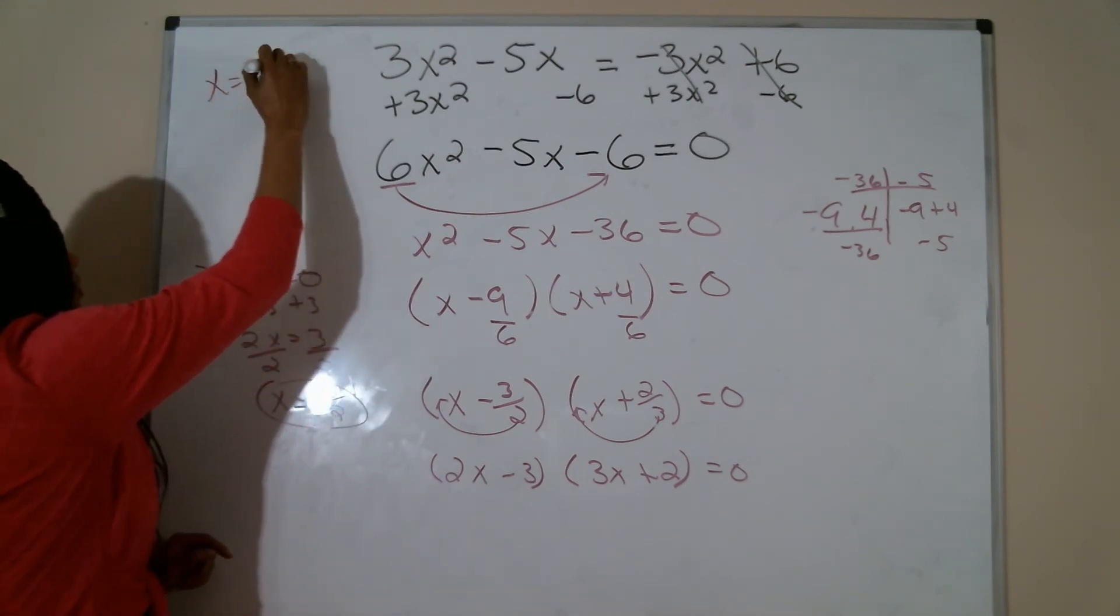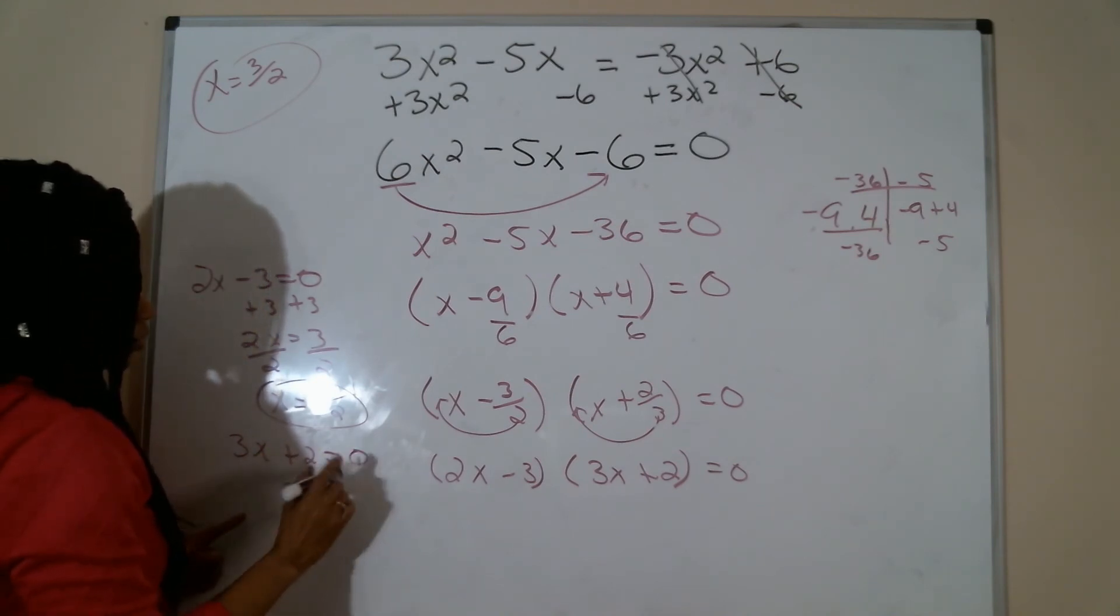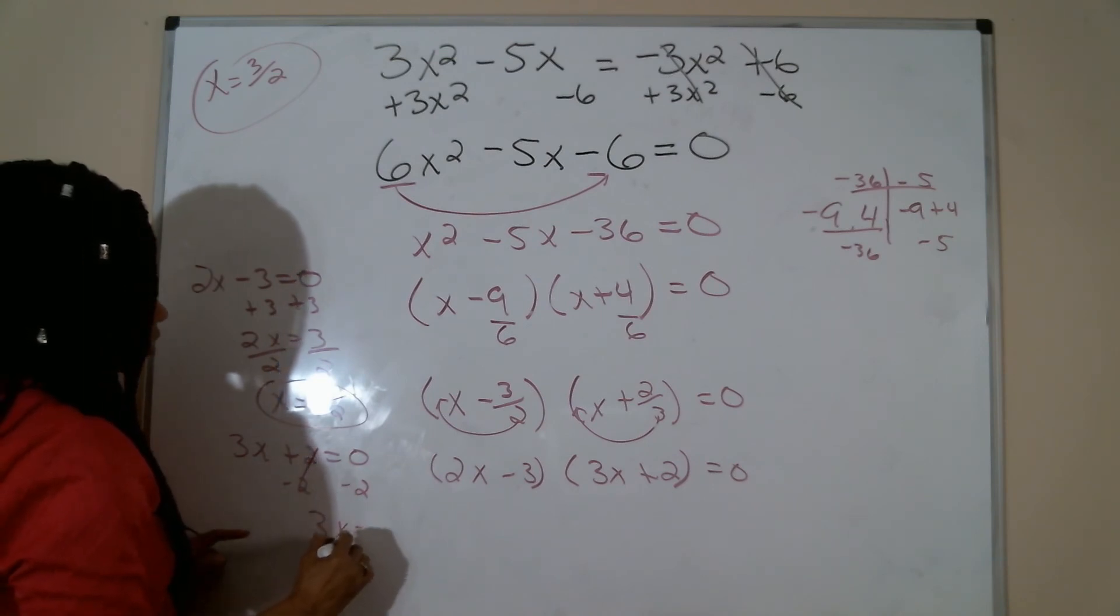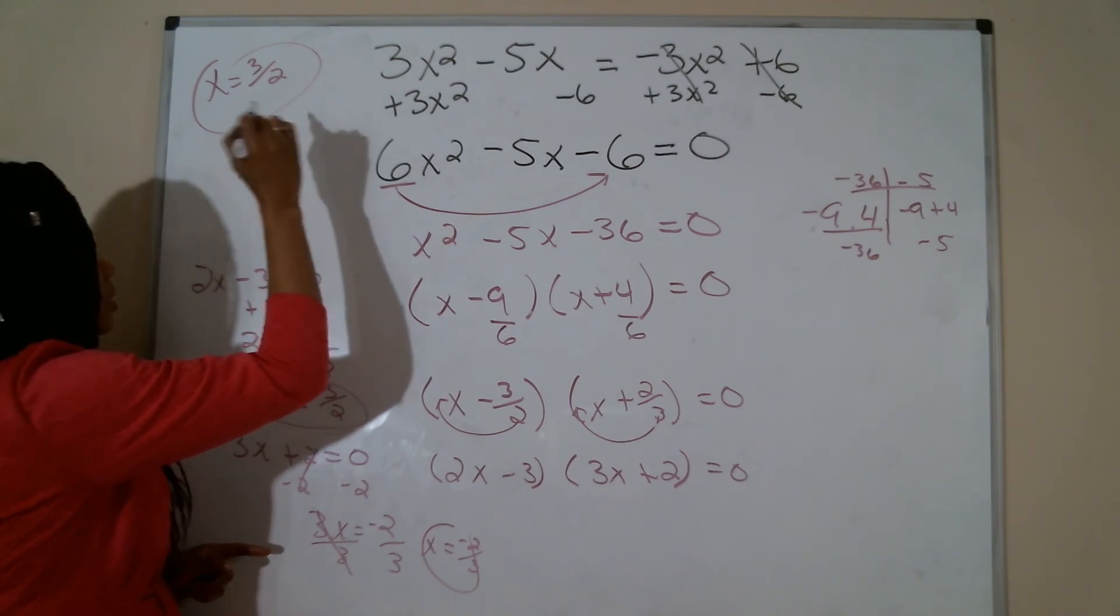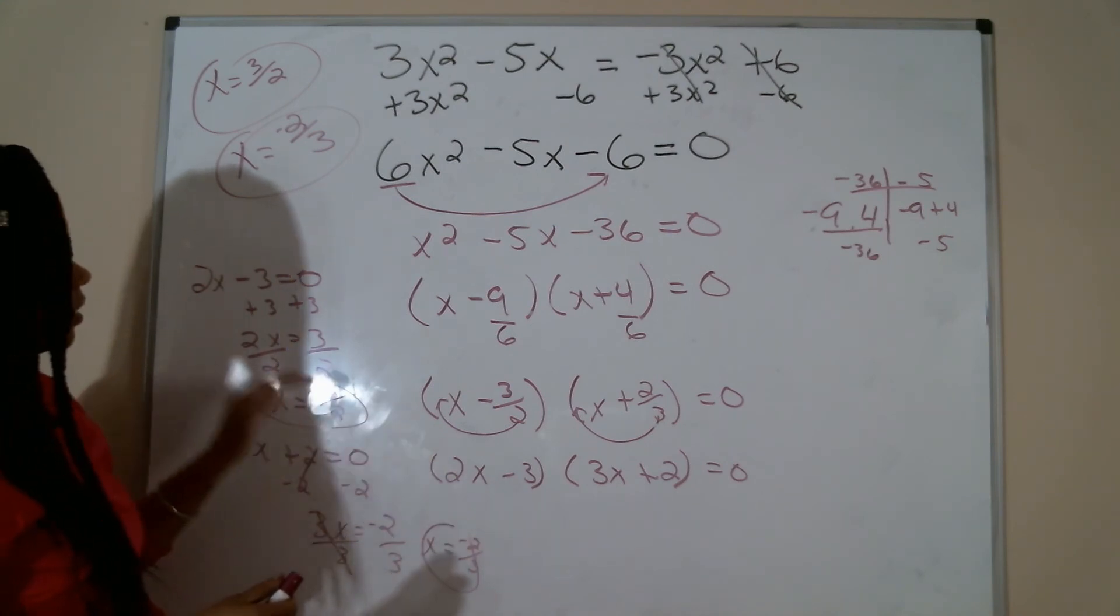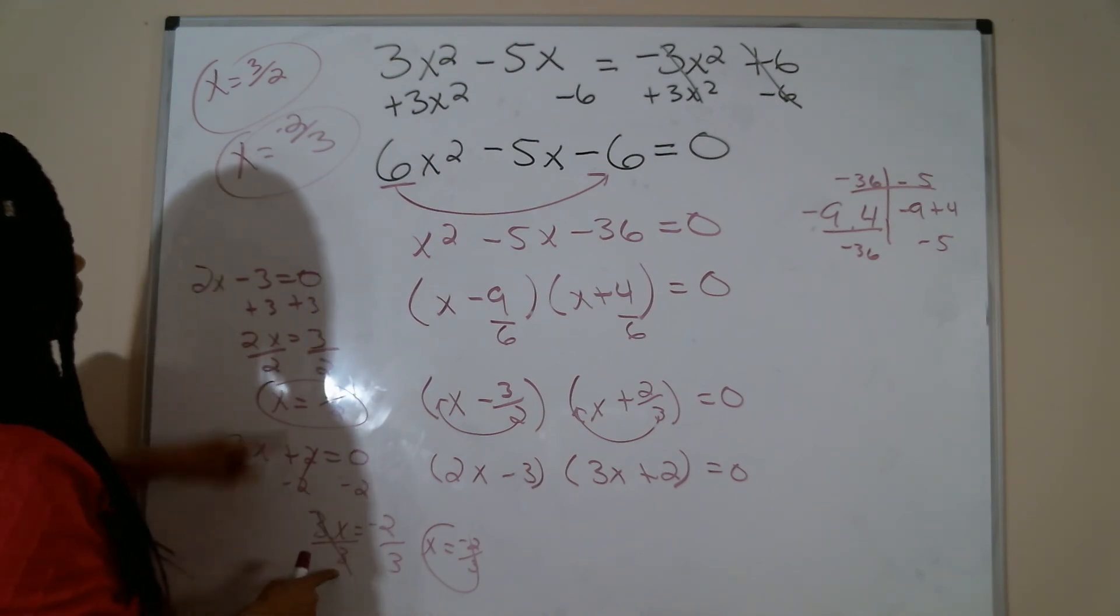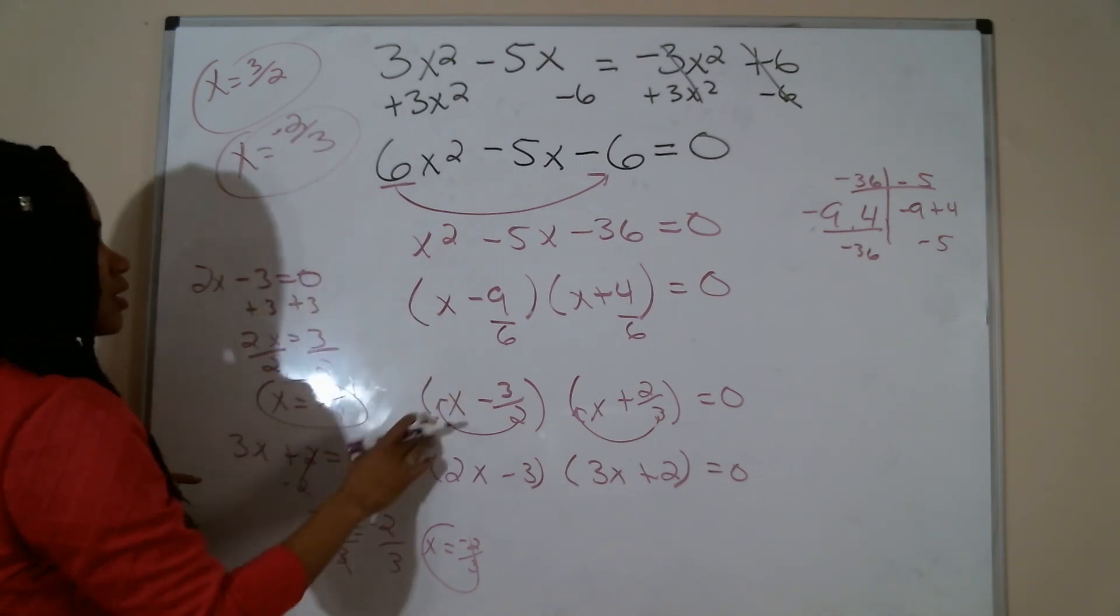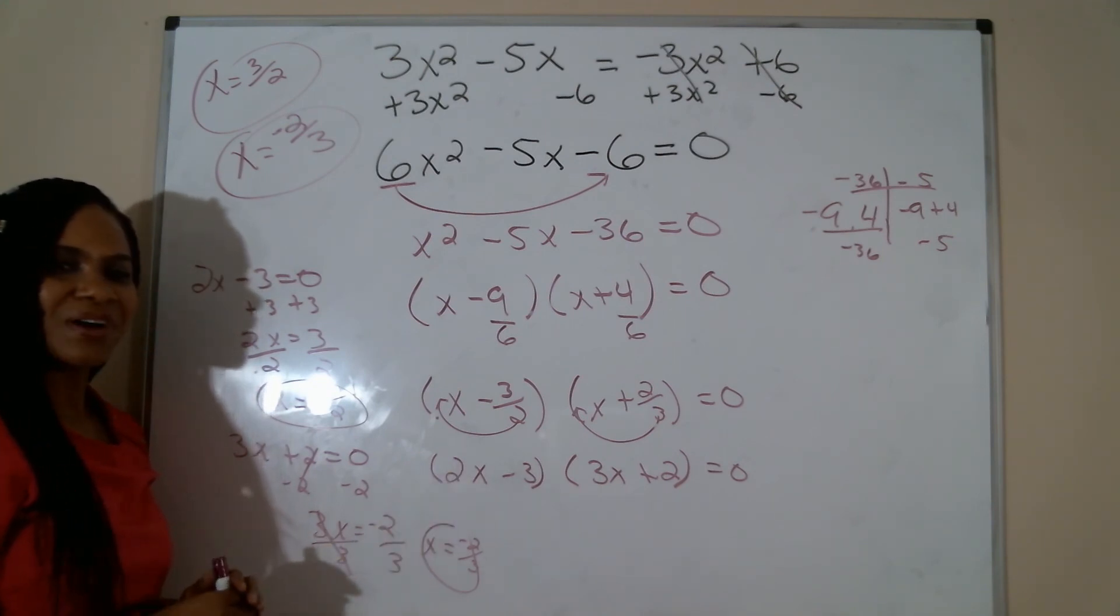And then 3x plus 2 is equal to 0. Subtract 2. This is just a two-step equation. Divide by 3. So x is equal to negative 2 thirds. A lot of the same numbers, so make sure we're careful with that. Here I added 3 divided by 2, so that's positive 3 over 2. Here I had to subtract 2 and divide by 3, so x is negative 2 thirds. So we've solved this problem by factoring using the slip and slide method. And so now let's try one on your own.